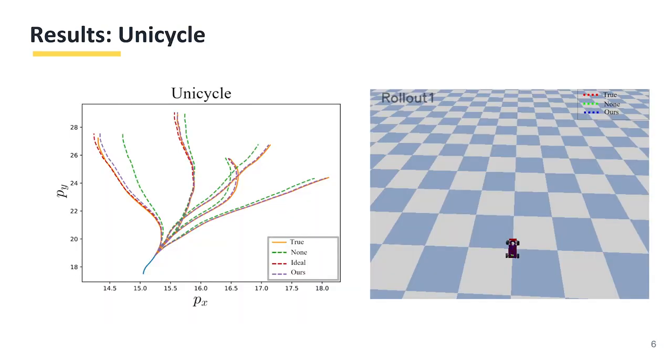We first evaluate our approach on a unicycle system. We show the rollouts of dynamics prediction following the online trajectory in PyBullet's environment. Compared to the baseline shown in green, which is naive Gaussian process trained on the same dataset, our method achieved similar accuracy for in-distribution data while improving prediction accuracy on the OOD range.